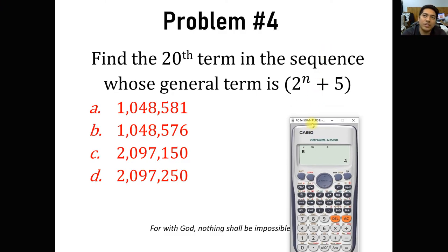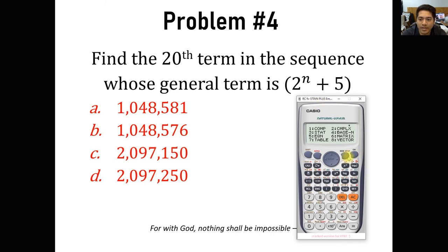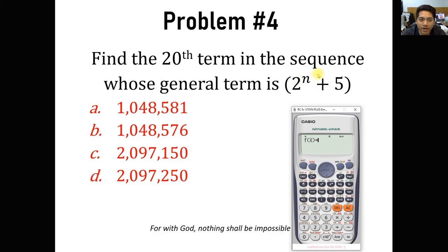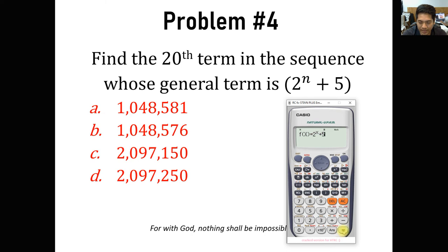This could be solved easily by going back to the calculator. We need to have a table of values: mode then table mode. We have f of x — this n as the variable, we replace with x. So just type in the general term: 2 raised to x plus 5, then click equals. For g of x, just skip it.